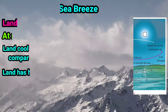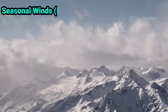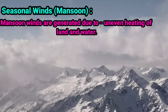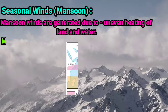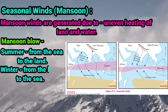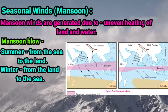Let's see the next type of wind. Number 3: seasonal winds — Monsoon. Monsoon winds are generated due to the uneven heating of land and water in the different seasons. During summer, monsoon winds blow from the sea to the land. In winter, they blow from the land to the sea. Southeast Asia, East Africa, and North Australia are regions where the pronounced effects of these winds are felt.